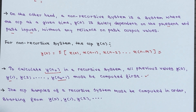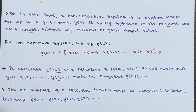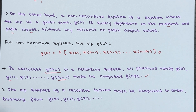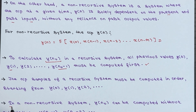Now let's switch gears and talk about non-recursive systems. These systems are a bit more straightforward. When we want to compute y of n naught, we don't need to bother with any previous output values like y of n naught minus 1 or y of n naught minus 2. In a non-recursive system, y of n naught can be computed without calculating past outputs.